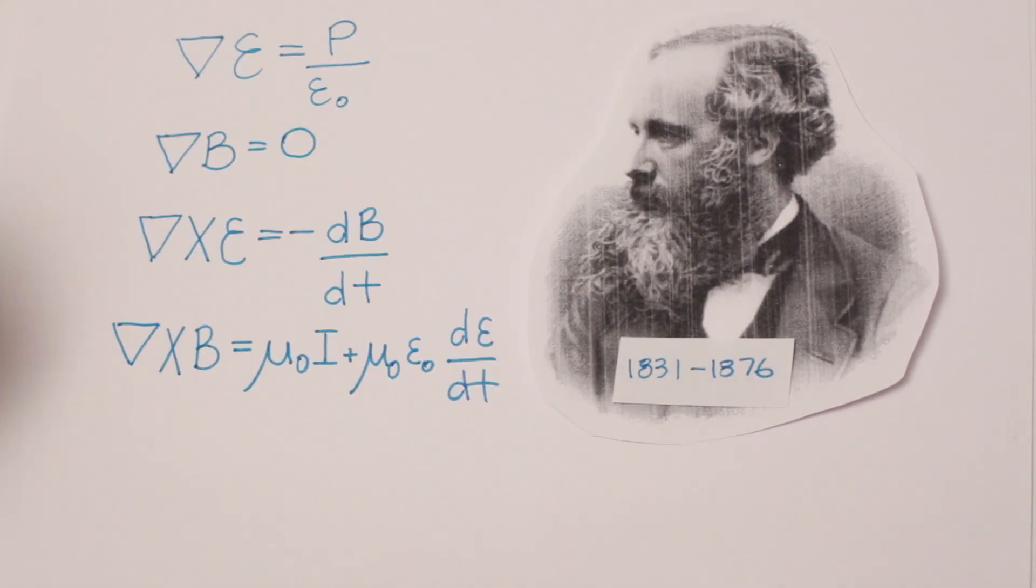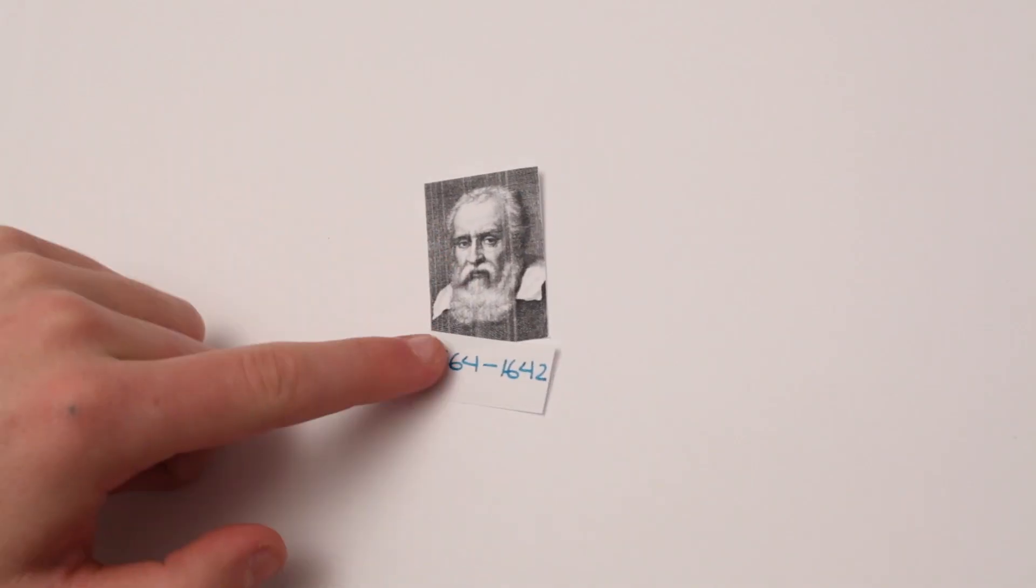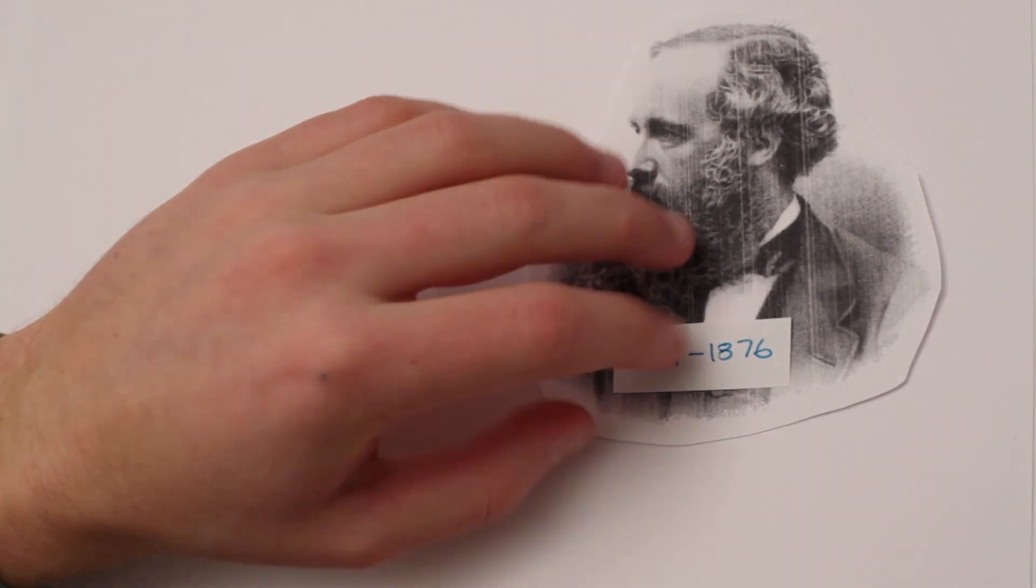Just as importantly, Maxwell's equations didn't specify a frame of reference for light. This whole video can be summarized as the two postulates of special relativity. From Galileo, we understand that all inertial frames are equivalent, and from Maxwell, we know the speed of light in a vacuum is invariant.